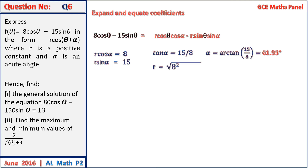L equals the square root of 8 squared plus 15 squared, giving L equals 17. Therefore f of theta equals 17 cos of theta plus 61.93 degrees.